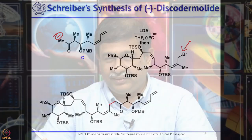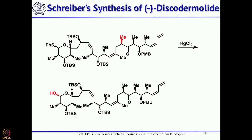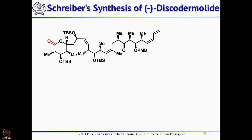At this point the complete carbon skeleton of Discodermolide is assembled, except that one methyl group needs to be introduced and the carbonyl group needs to be reduced. Treatment with lithium hexamethyldisilazide quenched with methyl iodide successfully introduced the methyl group. Then, for the lactone, the sulfur was removed with mercury chloride and oxidized with chromium trioxide to give the corresponding lactone.